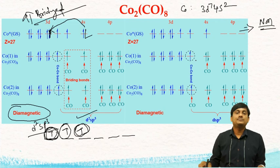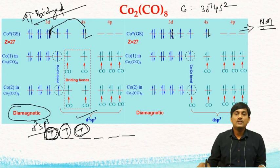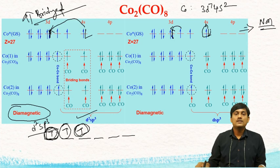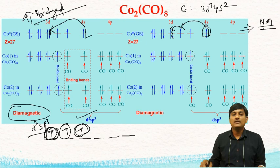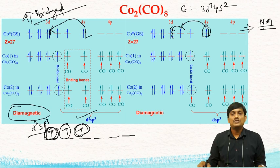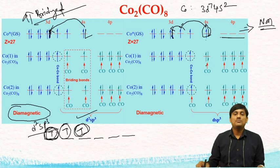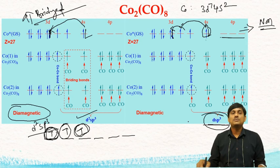In the non-bridged structure, the electronic configuration of cobalt in the ground state is 3D7, 4S2. In the presence of CO ligands, there is a rearrangement where the electrons pair up, giving 2, 2, 2, 2, and 1. One d-orbital has an unpaired electron, and the 4S and 3P orbitals are empty. There is dsp³ hybridization — not d²sp³.